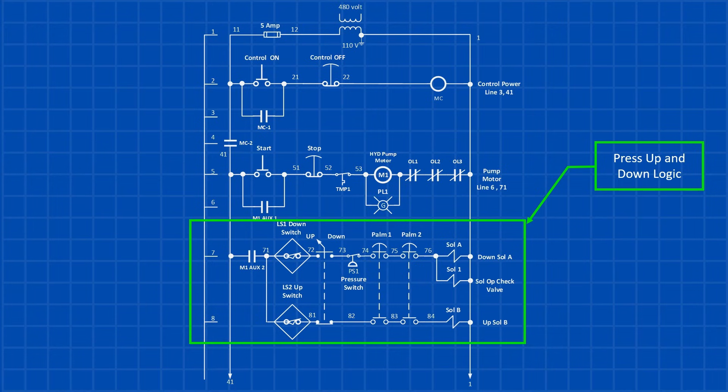If all these conditions are met, when the operator presses the two-handed palm switches, both the check valve and down valve solenoids will energize, causing the press to move down. The press will stop when either the down proximity switch or the high pressure limit switch is activated, which opens the circuit.